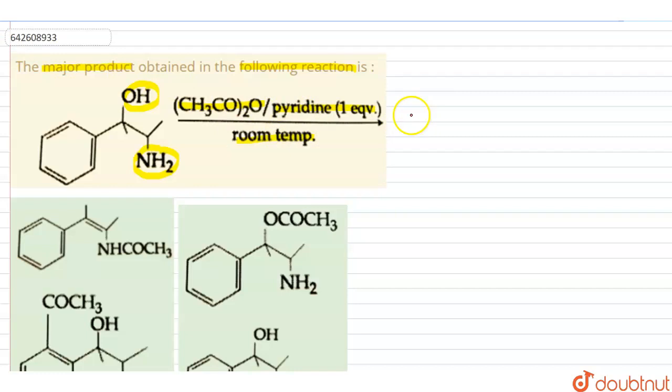So basically this reaction is going to proceed into acetylation. But this acetylation would be occurring on the NH2 group. Why is it so? Because it is going to be more nucleophilic in nature as compared to the benzene ring.